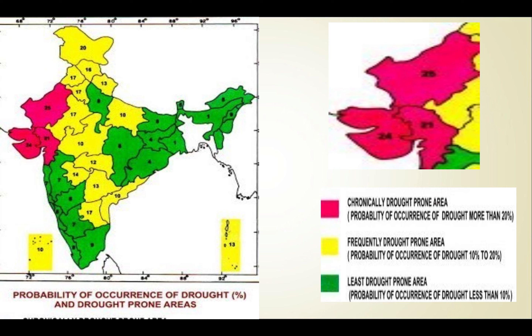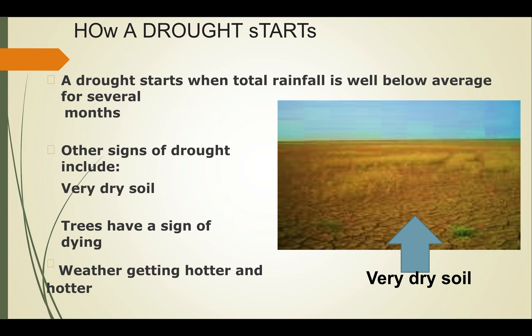Looking at the probability of occurrence of drought and drought-prone areas: the pink area shows a probability of occurrence of drought greater than 20% — that is a chronically drought-prone area. The yellow portion shows a probability of 10 to 20%, and the green area shows less than 10% — the least drought-prone area. A drought starts when total rainfall is below average for several months; other signs include very dry soil, trees showing signs of drying, and water temperatures rising.